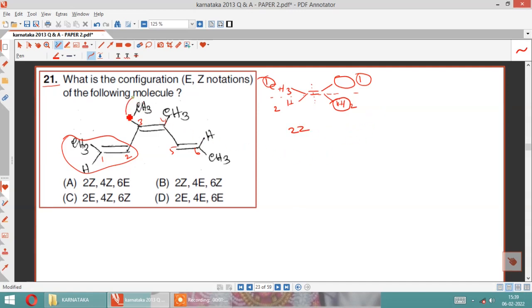Next we will see this part. You number it. This is 1, this is 2. This is 1, this is 2. Now on seeing horizontally, the numbers on the same side.